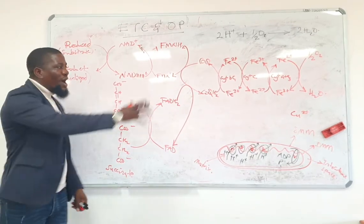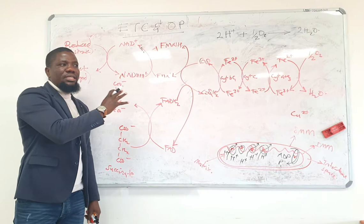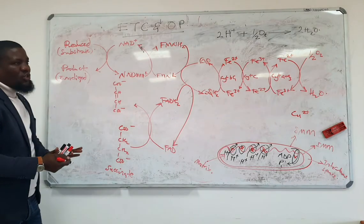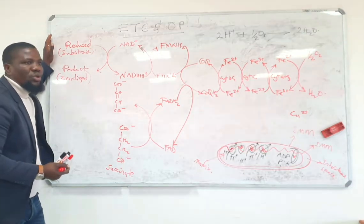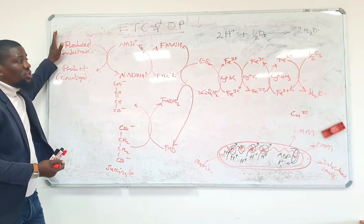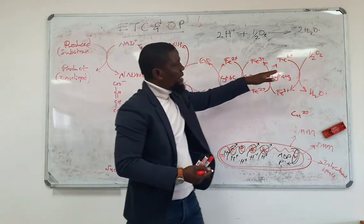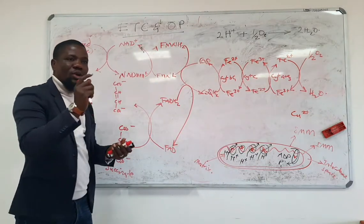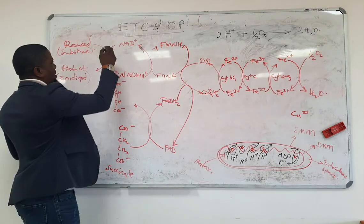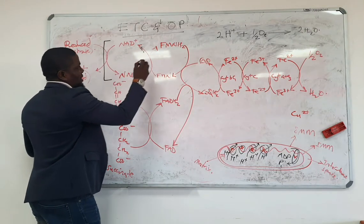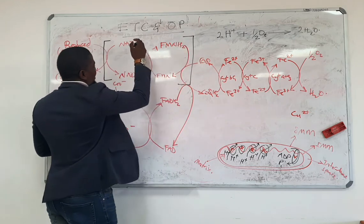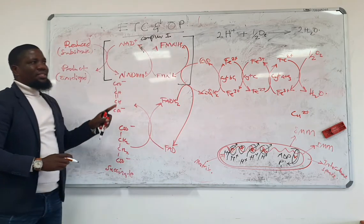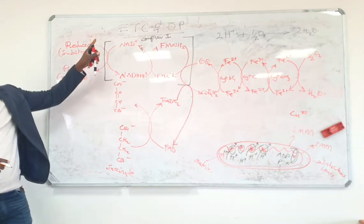So guys, what you are seeing here is the electron transport chain. This is how electrons are actually going to move or reduced equivalents are going to move from a reduced substrate all the way through these complexes and onto oxygen. In fact, I should show you where the complexes are. This one here. This is complex one.